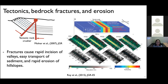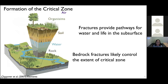Fractures cause rapid incision of valleys, easy transport of sediments, and rapid erosion of hill slopes. In this model simulation, you can see 60 times and 2 to 3,000 times changes in erodabilities. It can impact channel width, channel geometries, and profiles.